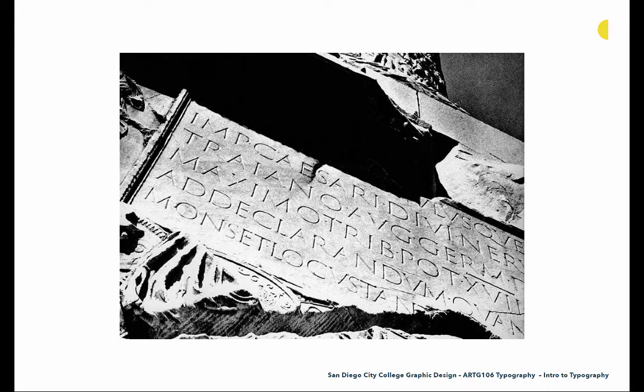This is particularly the Trajan column, which is known as one of the most beautiful inscriptions of Roman capitals in existence — often viewed as one of the greatest examples of Roman capitals. At this point, we have 23 uppercase letter forms; there's no J, U, or W, but we have all of the other characters, and they're very familiar to us in terms of how they look in our language today.